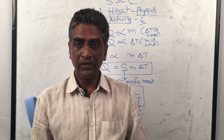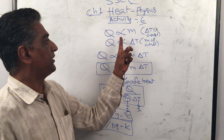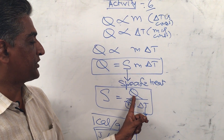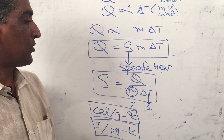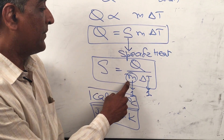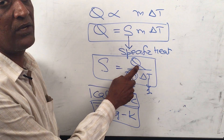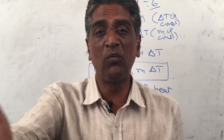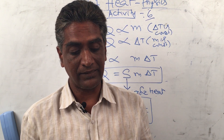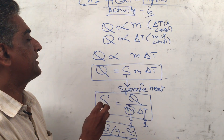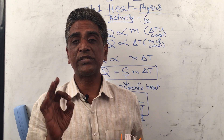If we know the specific heat of a substance, we can determine how much heat is required to raise the temperature of a given mass by a given amount. For example, if I have 5 kg of a substance and want to raise its temperature by 10 degrees centigrade and I know its specific heat, I can find the required heat Q using Q = m s delta T.